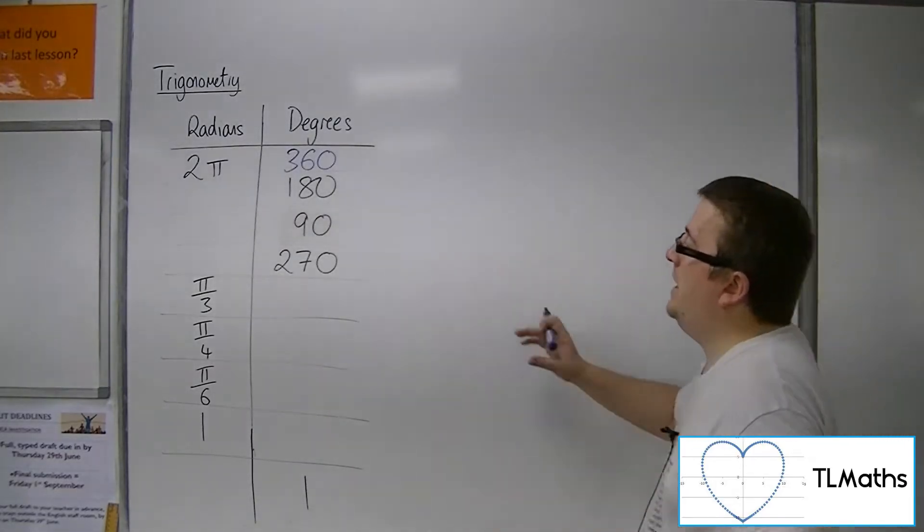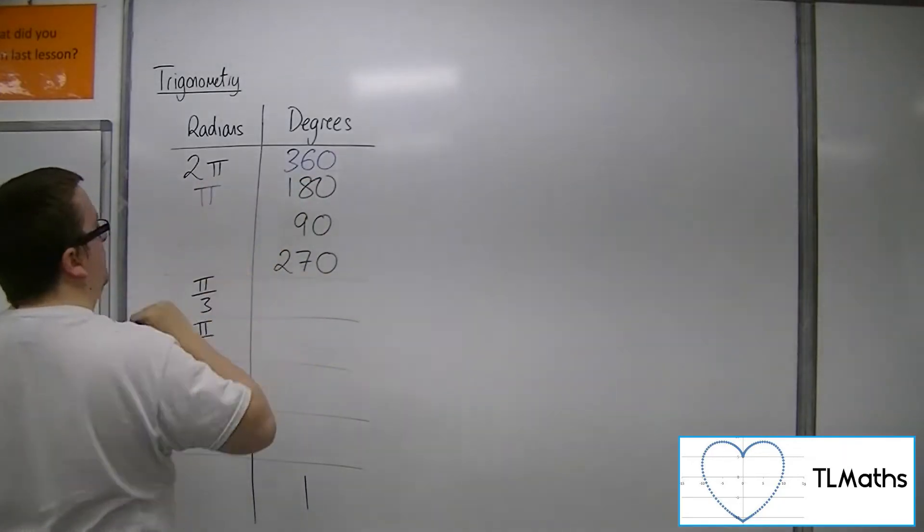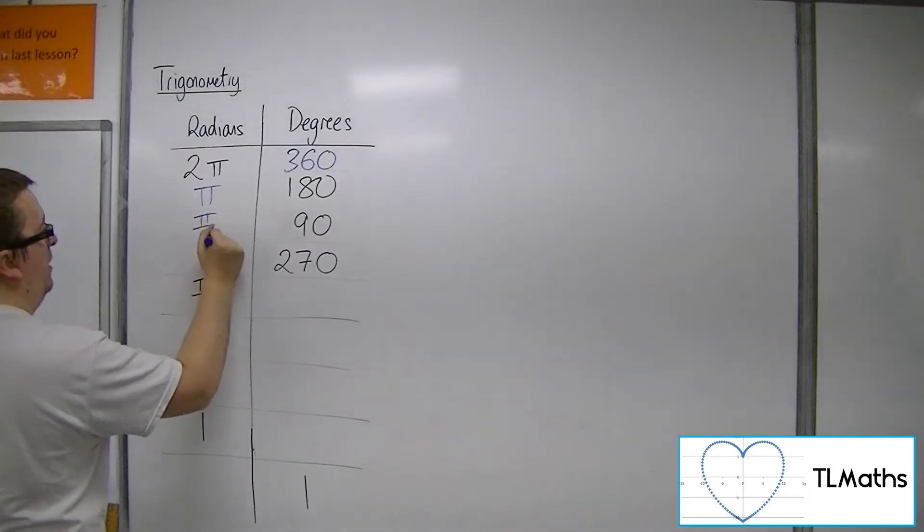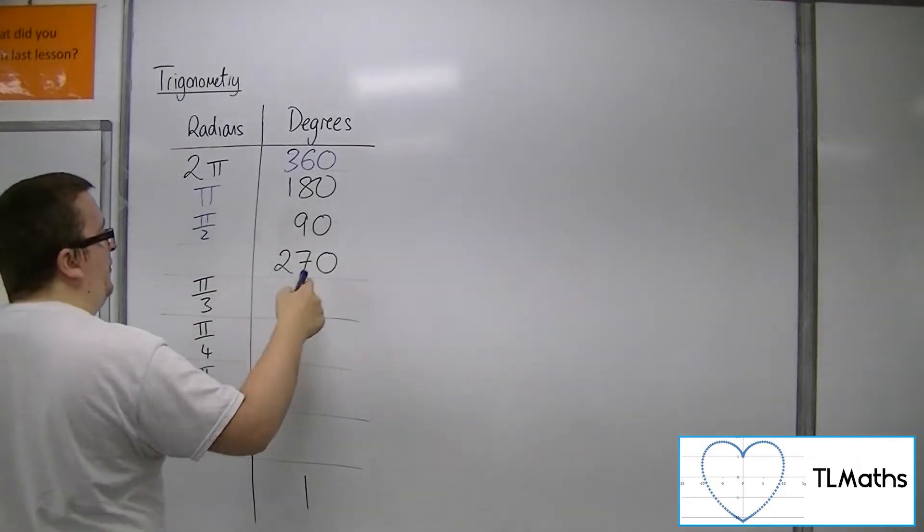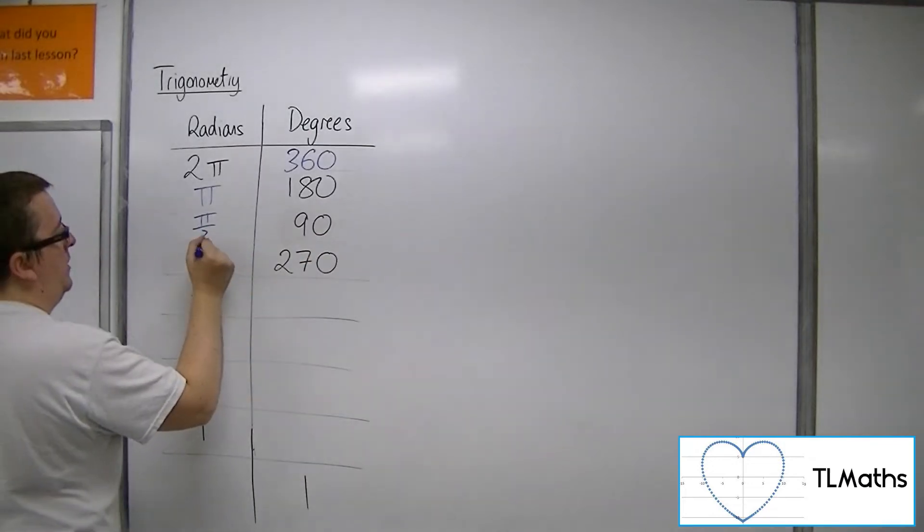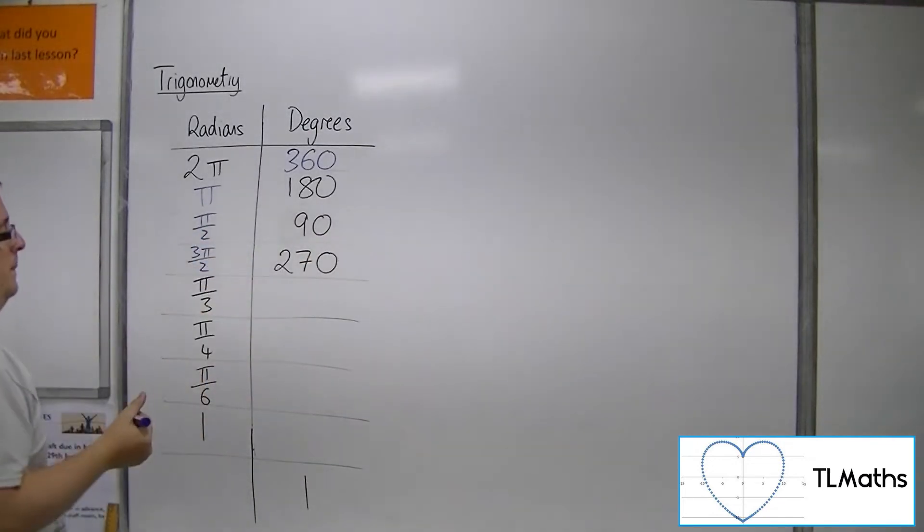So 180 degrees is half of that and so we would have pi. 90 degrees will be half of 180, so that's half of pi. 270 is 3 lots of 90 degrees, so that's going to be 3 pi over 2. So you can see how we can convert relatively easily.